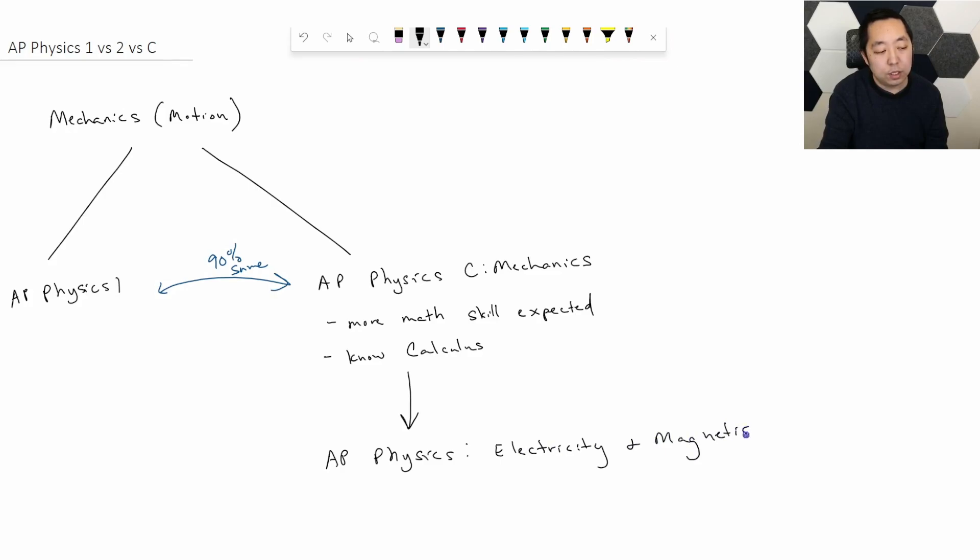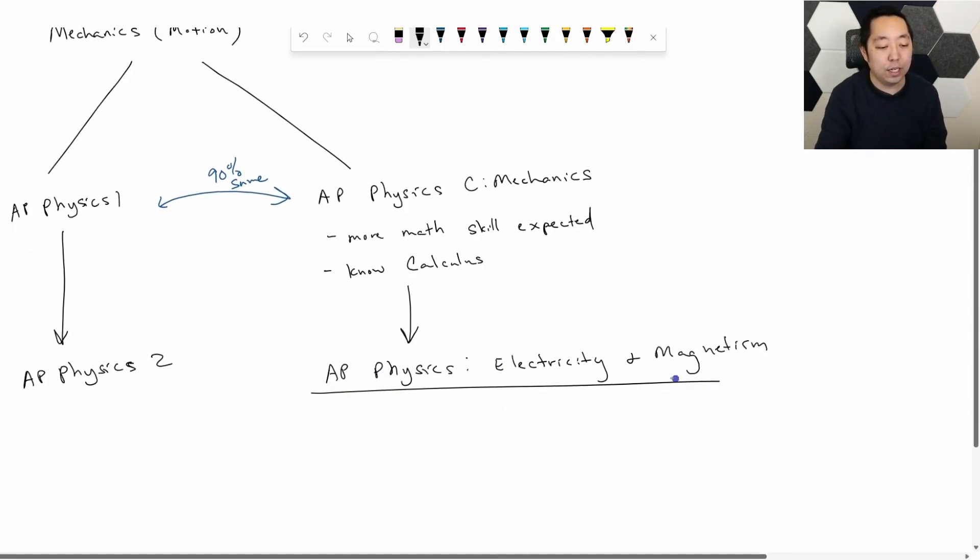Now, in AP Physics 1 and Physics C Mechanics, like I said, they were 90% the same. For AP Physics 2, they are not very similar. There's some overlap, but not nearly as much. These are two very, very, very different classes. This one is only on electricity and magnetism, only E&M.